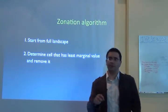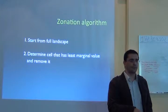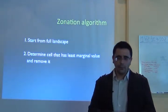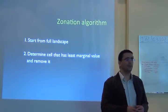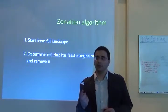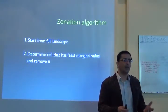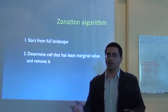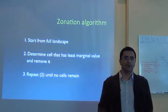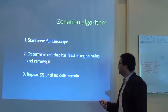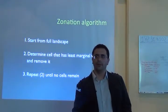So the marginal value of that cell is very high — it's the highest for that species. But then you can have a species that occurs in 90 out of 100 cells. The relative contribution of one of those 90 cells is pretty low. The species occurs in the other 89 cells, so that would be the marginal value or relative importance of the cell. Then you remove it from the landscape.